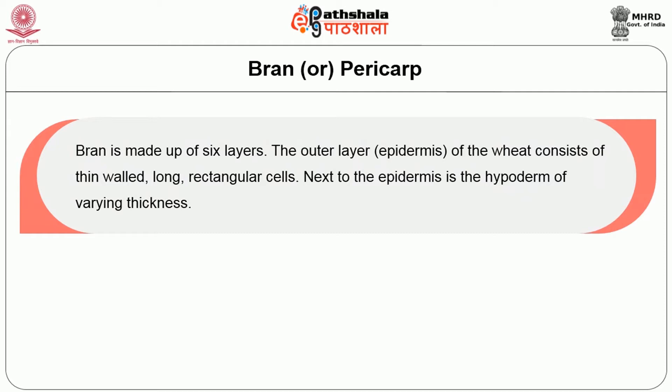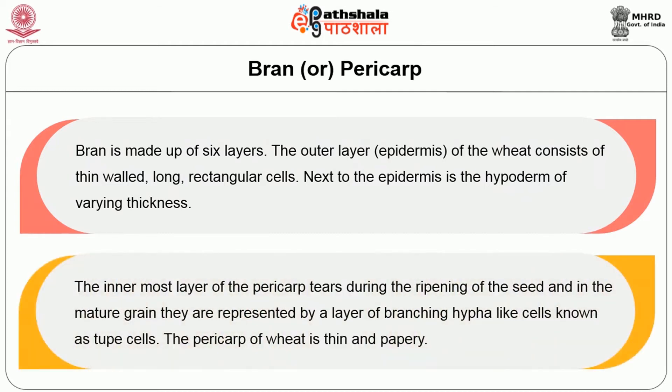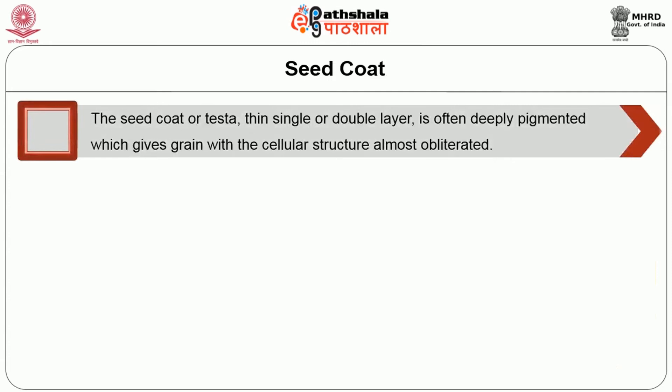Bran or pericarp: bran is made up of 6 layers. The outer layer of the wheat consists of thin-walled, long rectangular cells. Next to the epidermis is the hypoderm of varying thickness. The innermost layer of the pericarp tears during the ripening of the seed and in the mature grain they are represented by a layer of branching, hyphae-like cells known as tube cells. The pericarp of wheat is thin and papery.